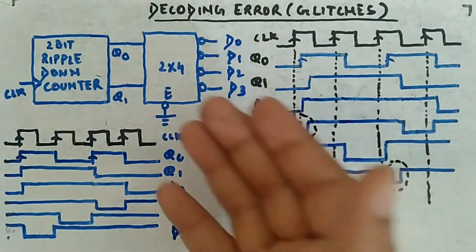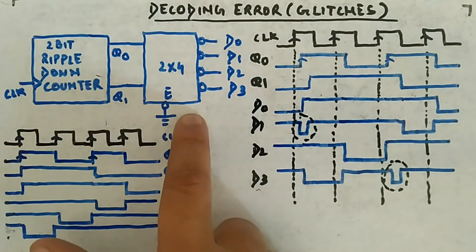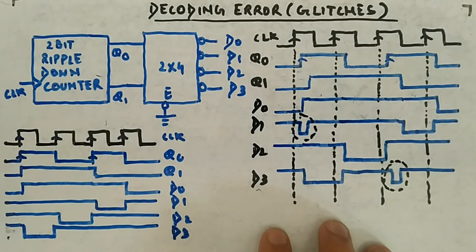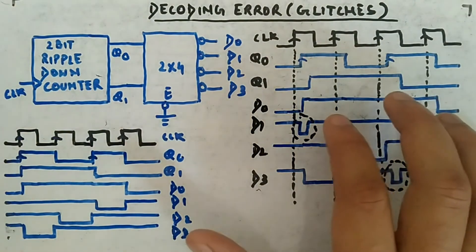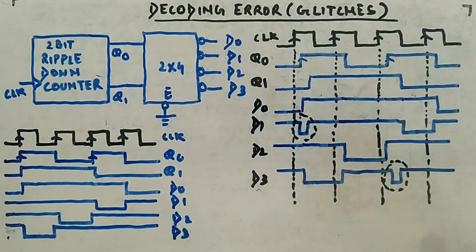We will provide a strobe signal on the enable input and we will see that this will solve the problem. You have to visualize it to understand why this works. I'll apply that signal and show you why it will work. So watch this video again if you are confused — because of the delays you are getting unnecessary sequences, and that is what is called decoding error. How to remove it, we will see next.